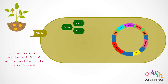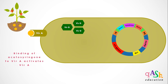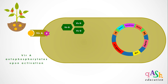Agrobacterium contains the Ti plasmid, which has the vir genes. Two of the vir genes, VirA and VirG, are constitutively expressed by Agrobacterium. VirA receptor protein is found on the membrane and cell wall, whereas VirG is an internally present protein. Acetosyringone from the soil binds to the VirA receptor protein and activates it.